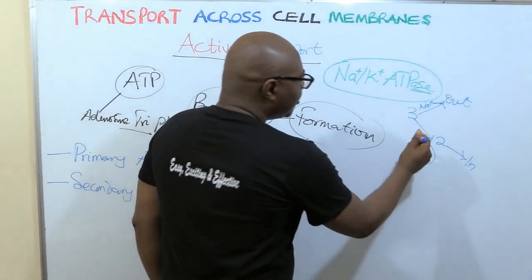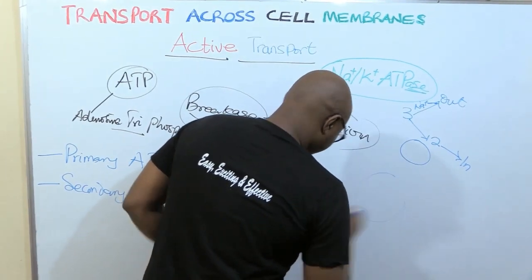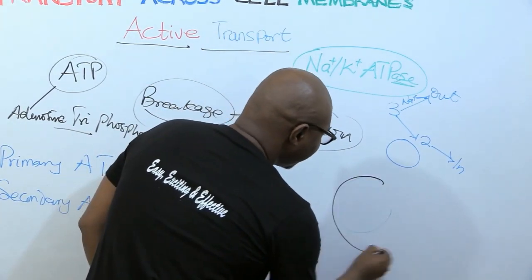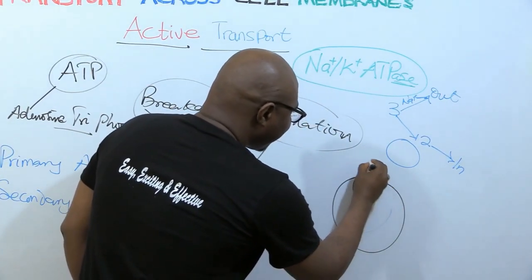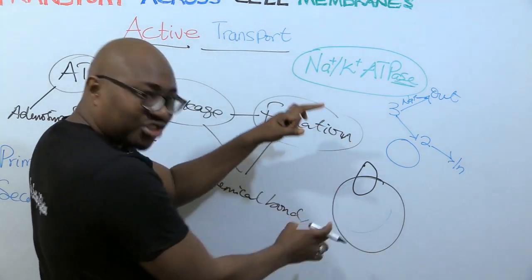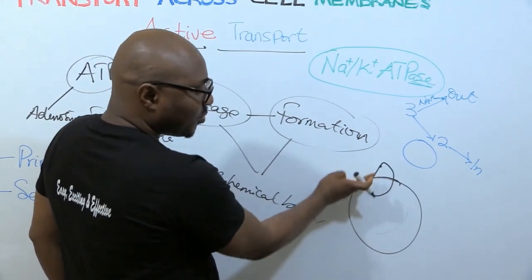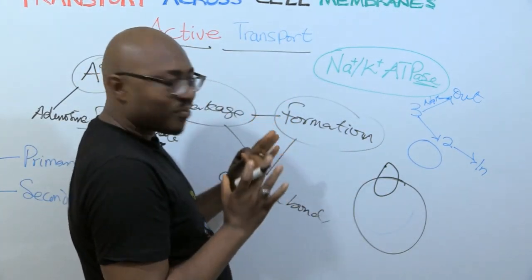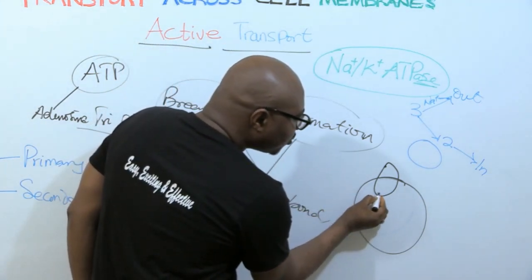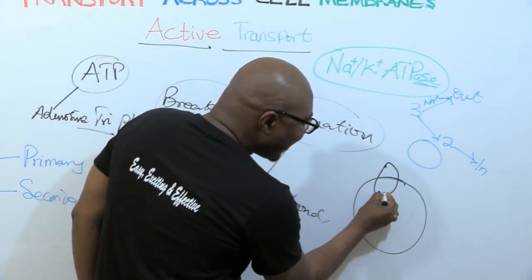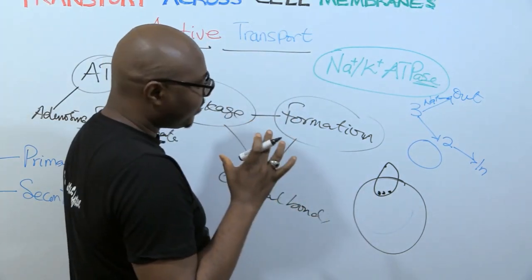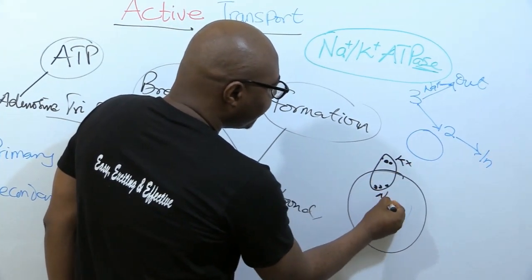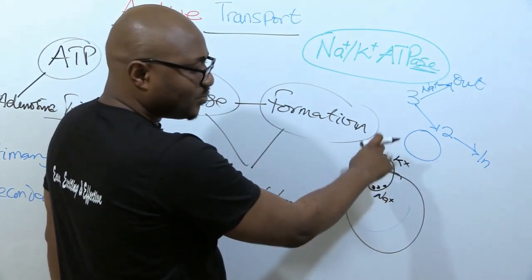That's why it needs that so much energy from ATP. And then it takes in potassium. Potassium also is already much inside but less outside. But it still takes it in. Now what is the mechanism? This is what happens. Carrier proteins, one of the ways they function is that you must always remember they have shape. They can change shape, called conformational change.